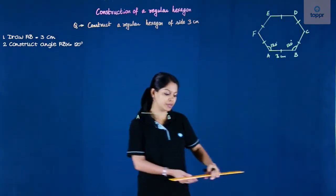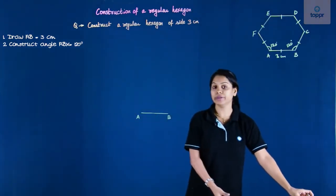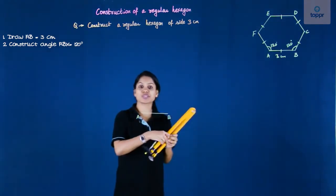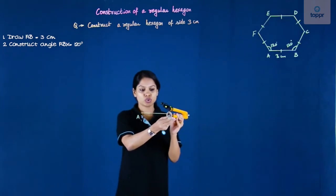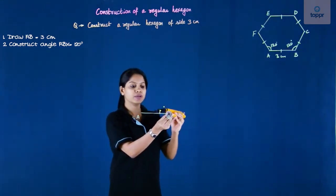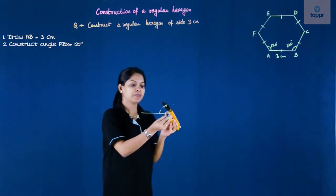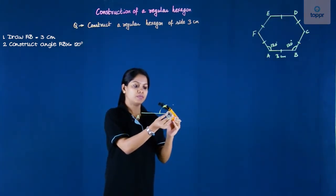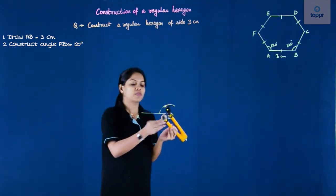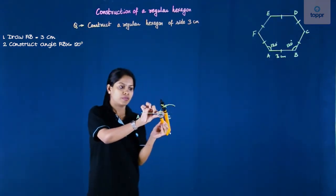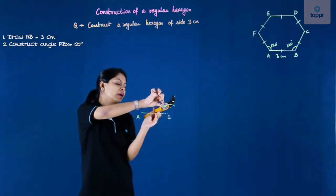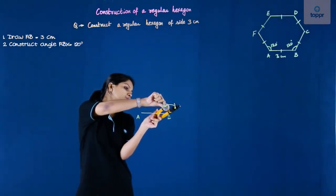So I will start with B here. We will first construct 120 degree at B. Now constructing 120 degree is very simple—it is just 60 degree plus another 60 degree. So I will first place the needle at B, and here is my arc. This is 60 and here is another 60.